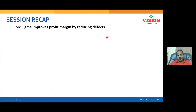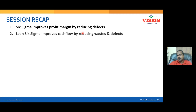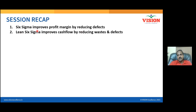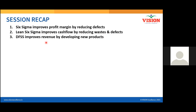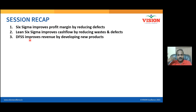Six Sigma helps improve the profit margin by reducing defects, and defects are reduced by reducing variation. When we say Lean Six Sigma, it is not only about defect reduction — it is also about improving efficiency. That is why Lean is added. When you improve efficiency, it improves cash flow, reduces both defects and waste, and operational cost goes down. DFSS — Design for Six Sigma — focuses on developing new products to create new revenue.